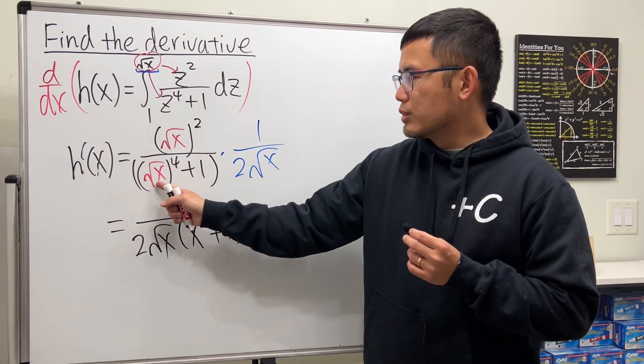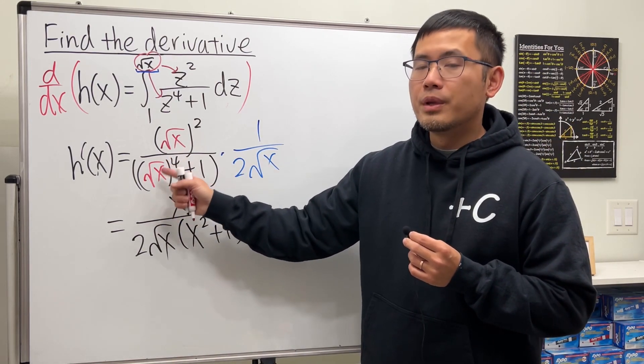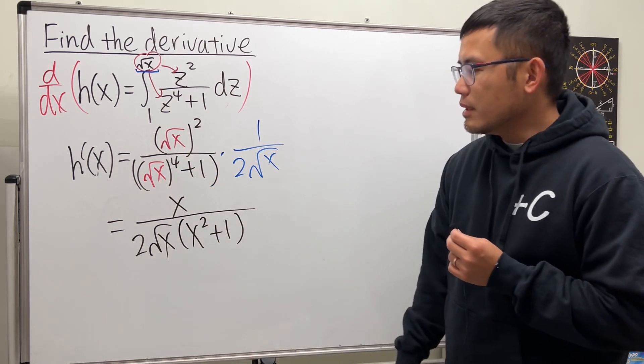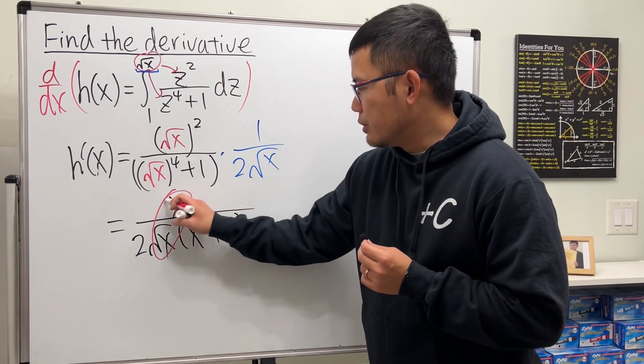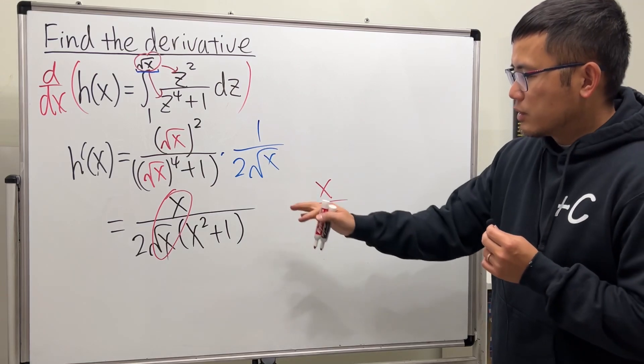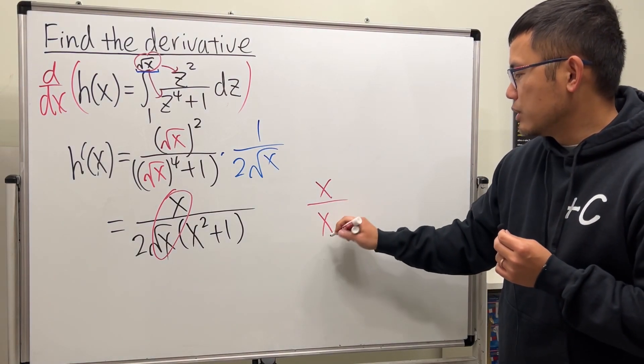Or if you would like, you can also look at this as the 1 half power. 1 half times 4, you get 2 for the power. And then finally, this and that can be reduced. So let me remind you, x over square root of x is the same as x to the 1 half power.